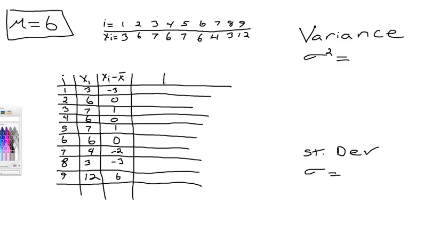Our next column, we have to square this column. So if we write that up here, it's x sub i minus the mean, and we square it. So negative 3 squared is 9. 0 squared is 0. 1 squared is 1. 0 squared is 0. 1 squared is 1. 0 is 0. Negative 2 squared is 4. Negative 3 squared is 9. And 6 squared is 36.